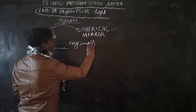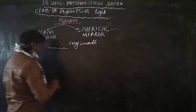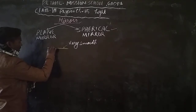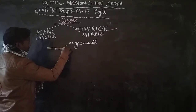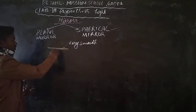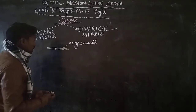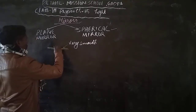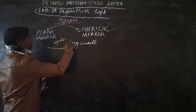A mirror can be termed as a substance or an object which provides regular reflection because it is highly smooth and highly polished. Let us consider a surface that is very, very smooth and polished on one side — you paint it on the other side — so this smooth side becomes a better reflector and provides regular reflection.